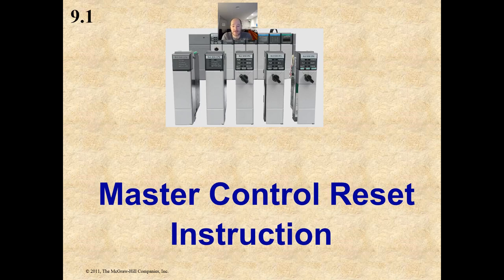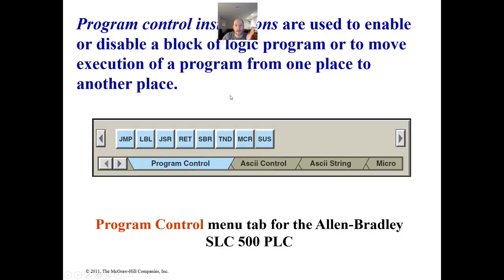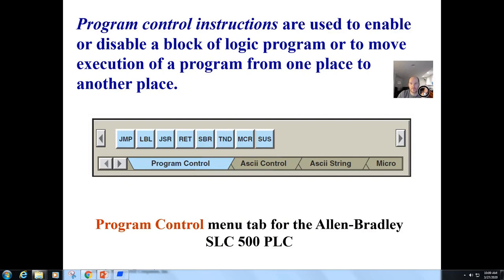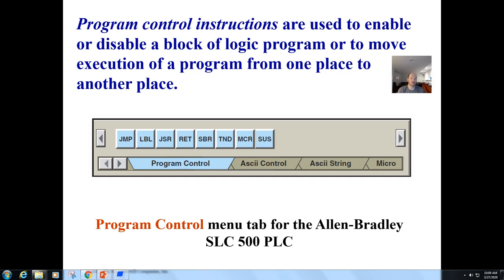The first thing we want to talk about is the master control reset instruction. You can compare it to a master control relay. When dealing with program control instructions, these are things that can affect large amounts of information in a run by either turning them on, turning them off, allowing things to activate, allowing things to deactivate, or just skipping them altogether. They're used to enable or disable blocks of logic programs, and to move execution of a program from one place to another.